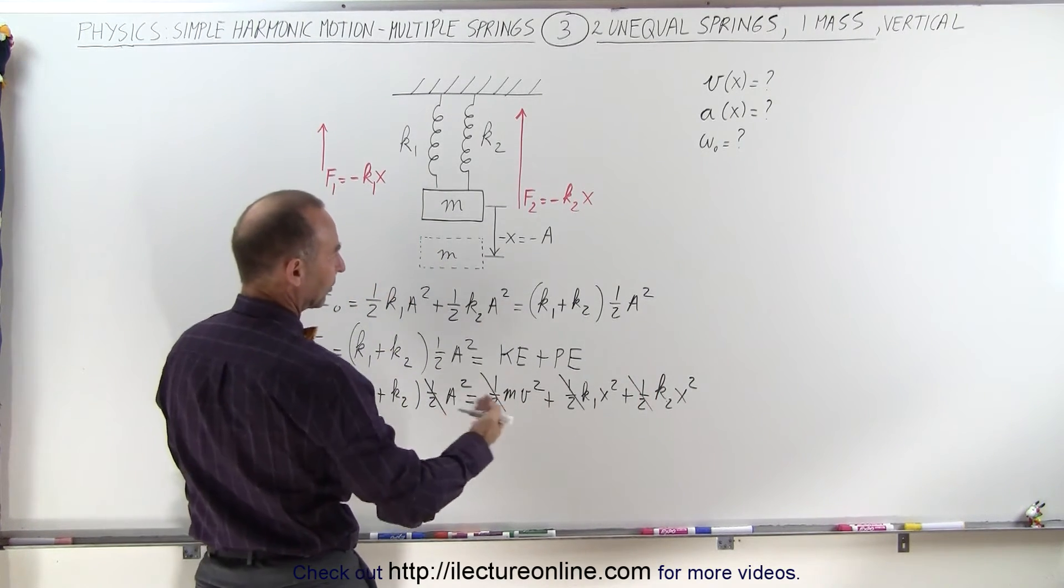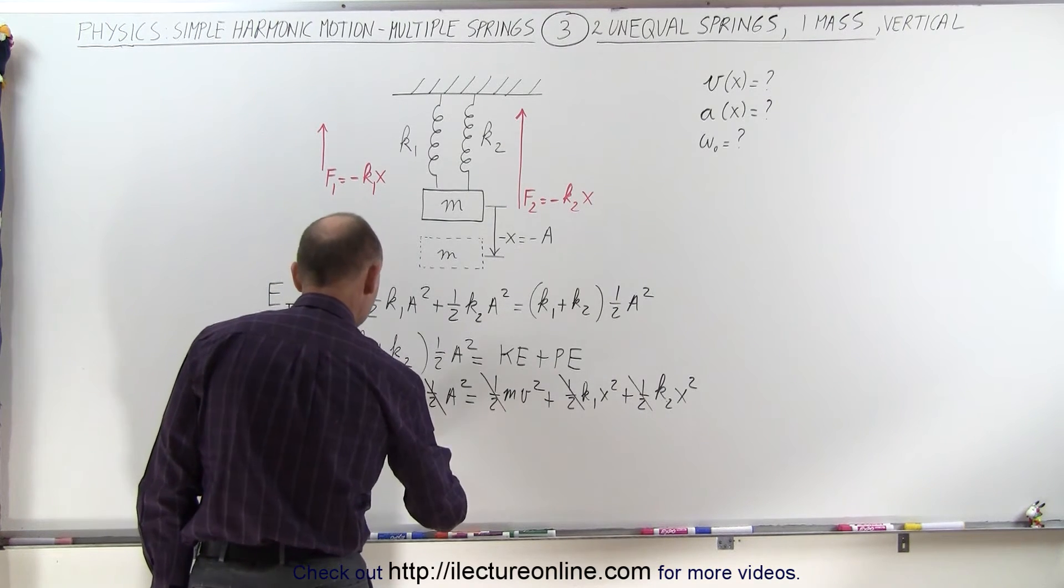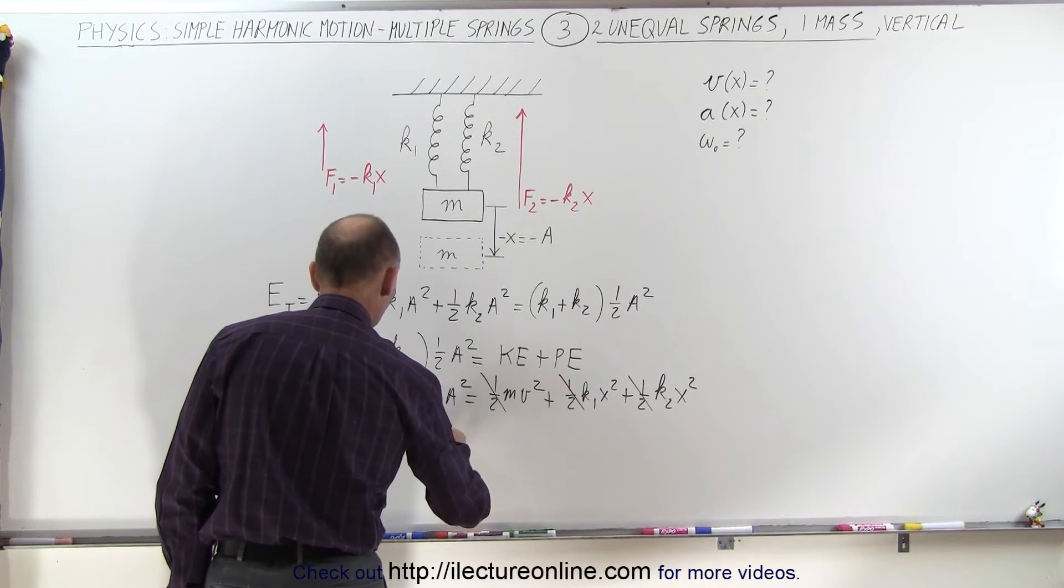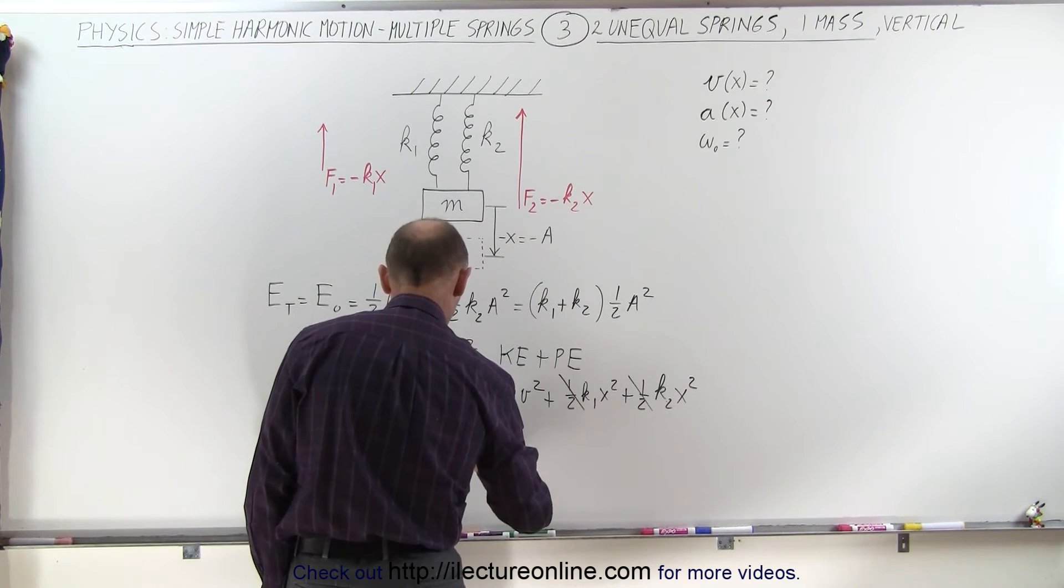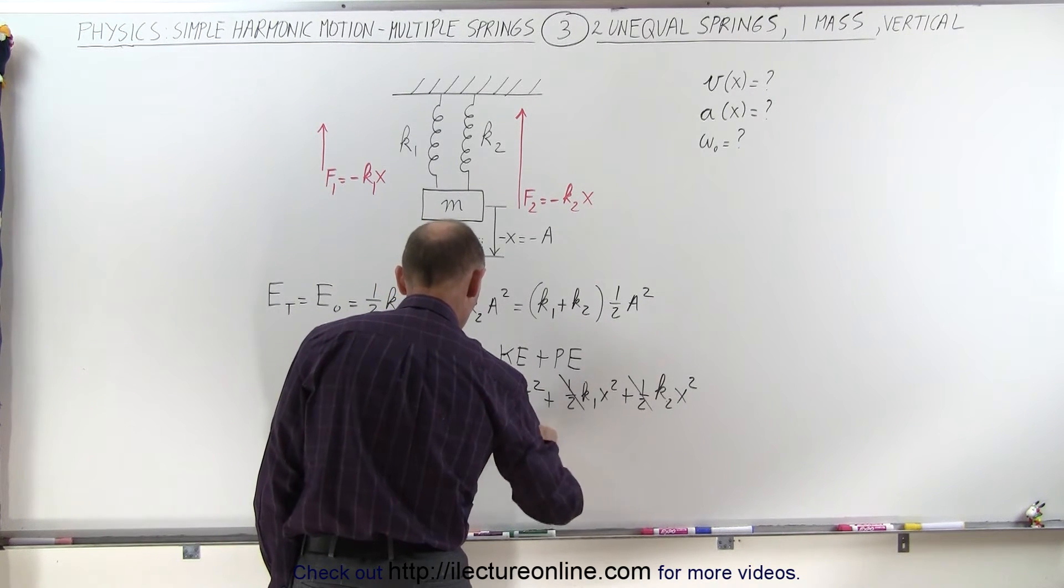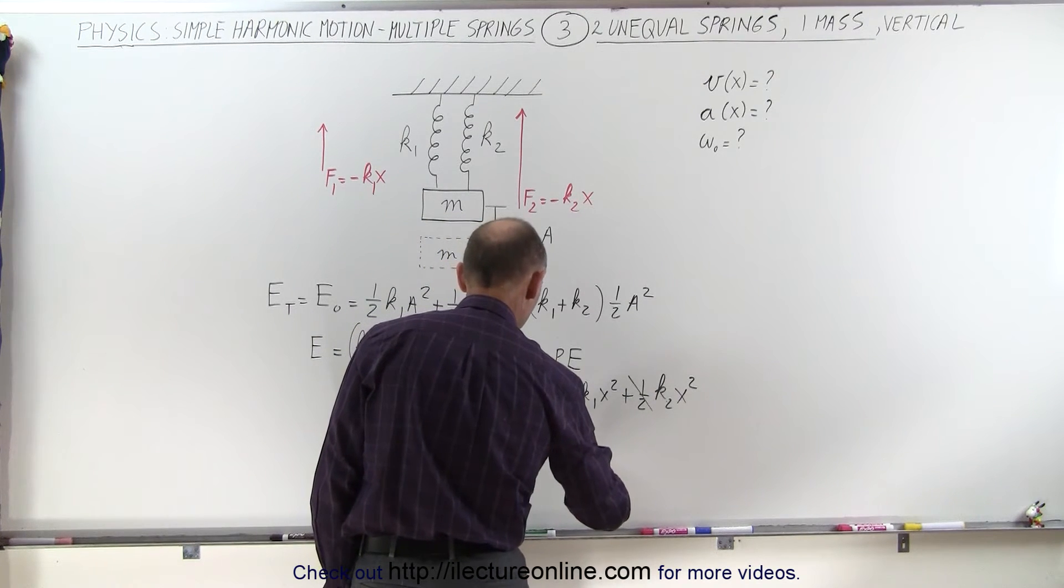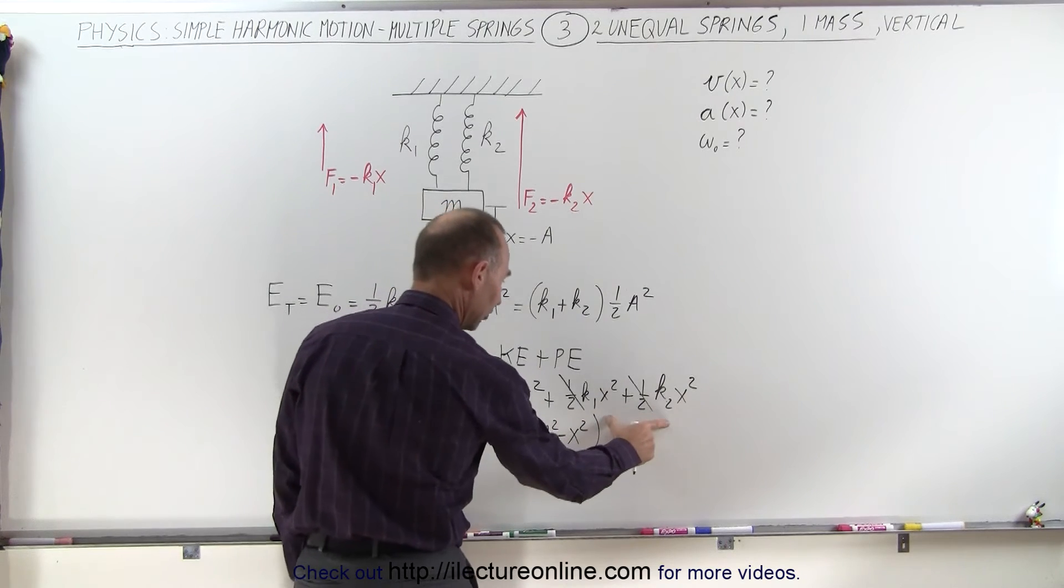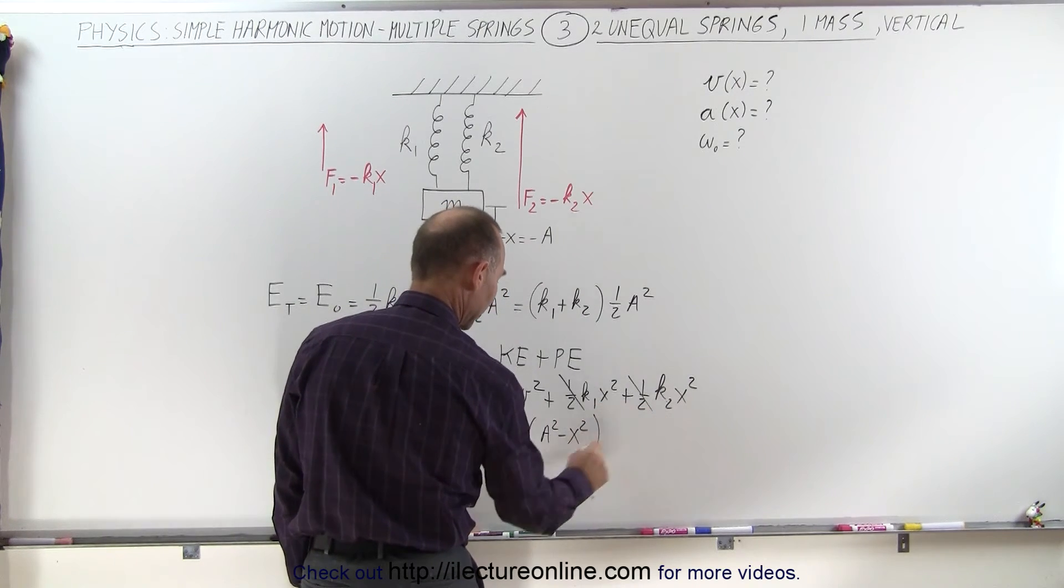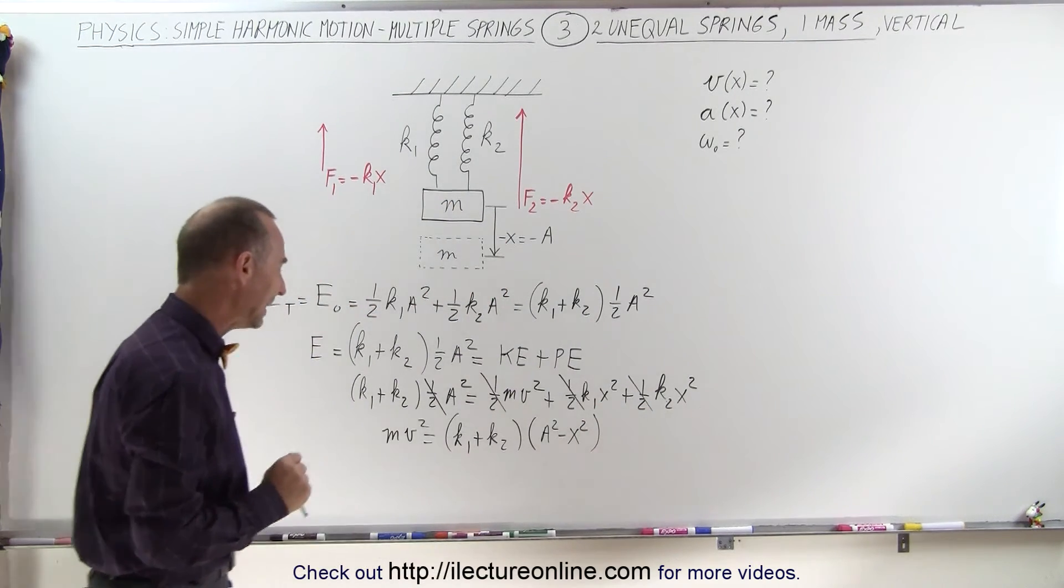Or in other words, we can factor out an x squared, and we can then get mv squared is equal to k1 plus k2 times A squared minus x squared. Because when I move this to the other side equation, this becomes negative, so the x squares become negative.